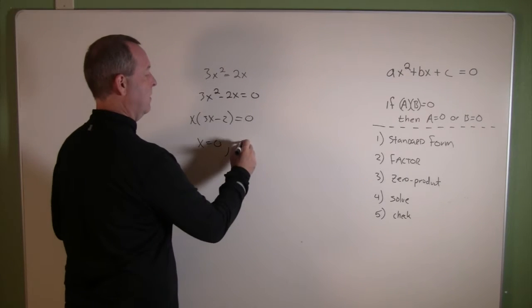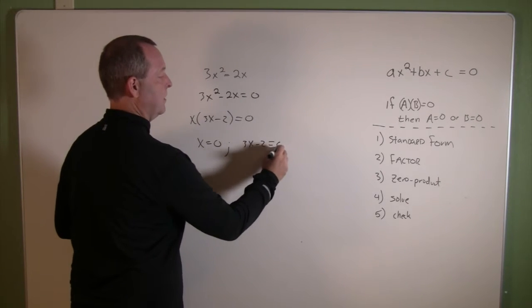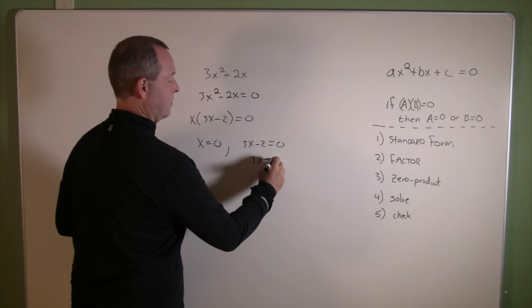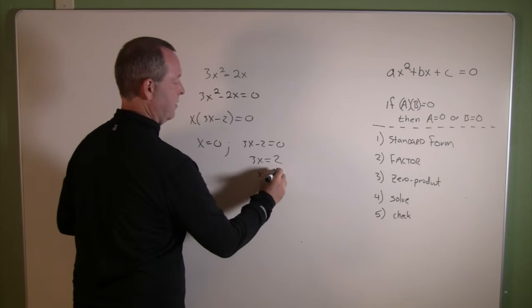Set the second factor to zero, 3x minus 2 equals zero, 3x equals 2, x equals 2 thirds.